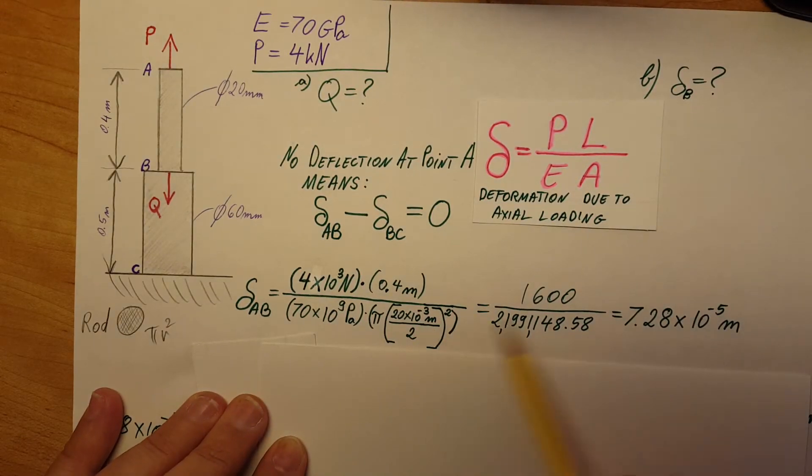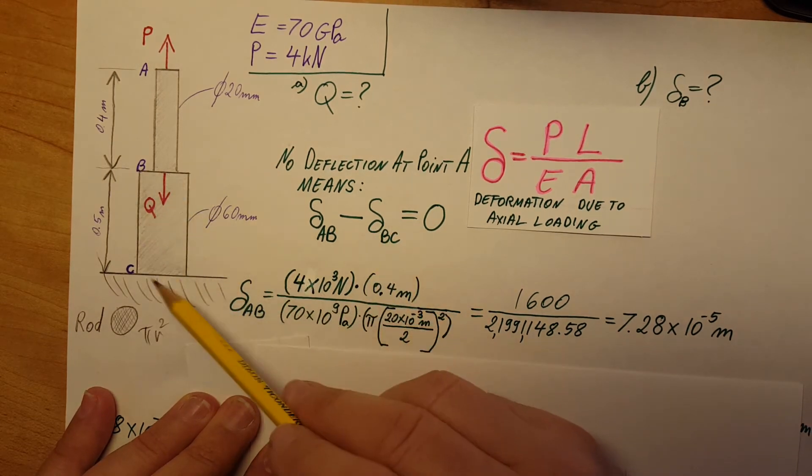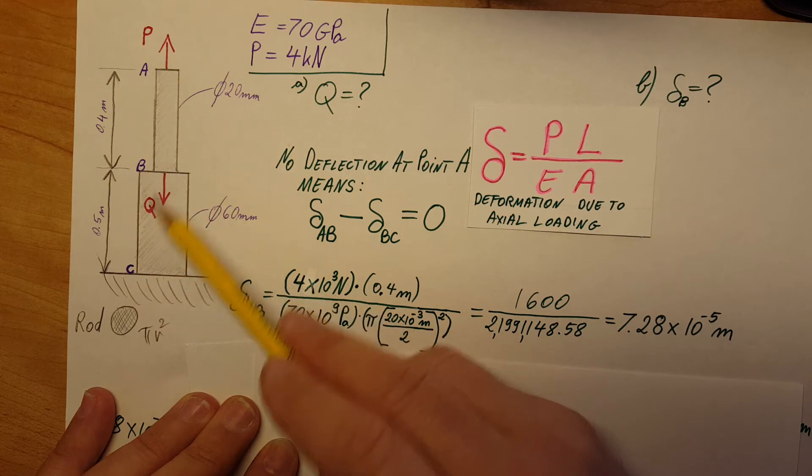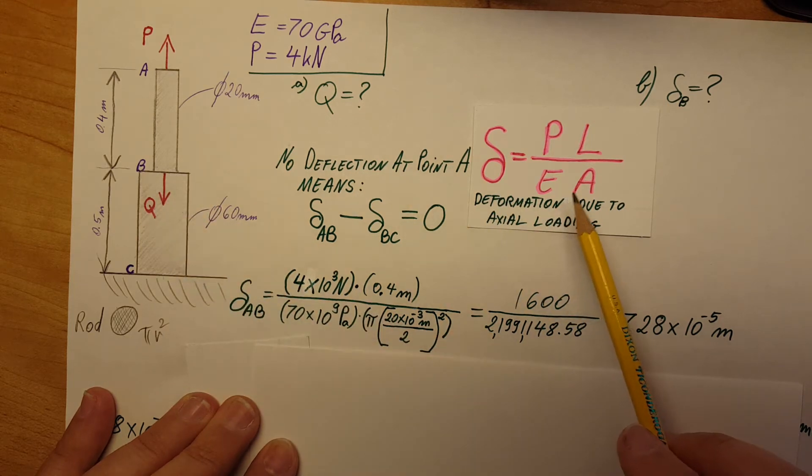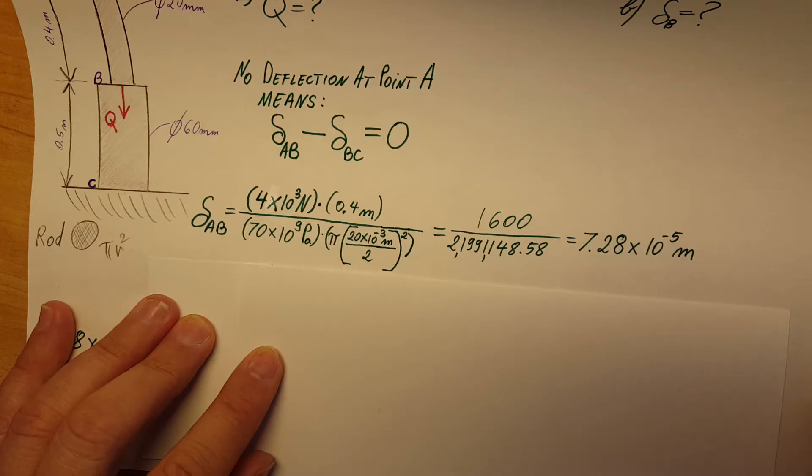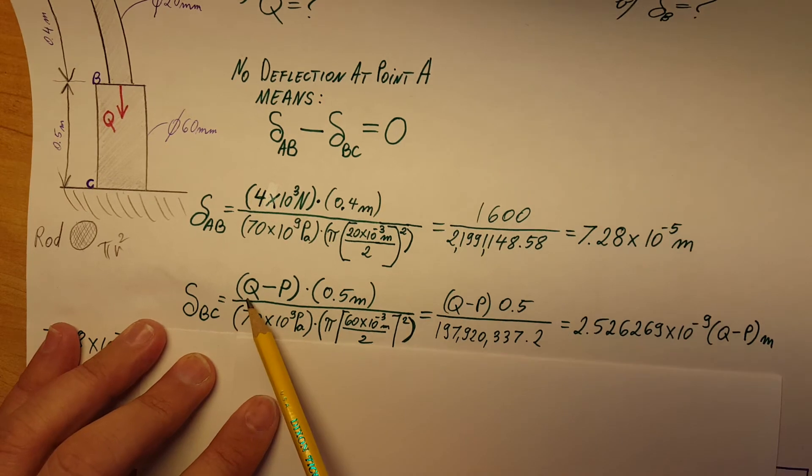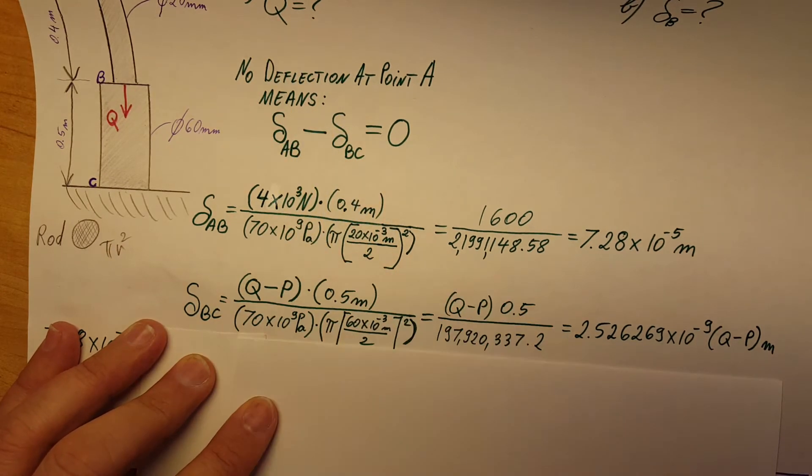There you have it, plug it in and we have our value. Now our second deformation in part BC, we're gonna rely on the same formula, but in this part we're gonna notice that we have Q—that's exactly what we want to find.